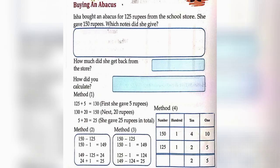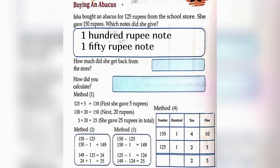Buying an abacus. Isha bought an abacus for 125 rupees from the school store. She gave 150 rupees. Which notes did she give? So, here she gave 100 rupee note and 150 rupee note. How much did she get back from the store? She got 25 rupees. How did you calculate? 150 minus 125 is equal to 25.